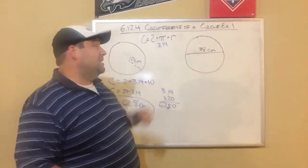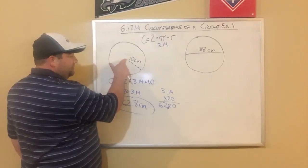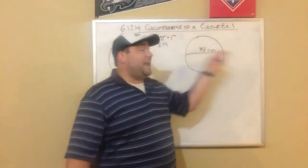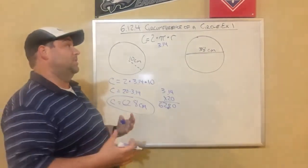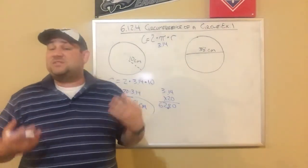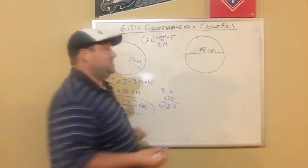So let's look at our second circle here. This circle, we weren't given a radius. We weren't told how much it is from the middle to the edge. We were told how much it is across the circle. That's called the diameter of the circle. And when you know the diameter,